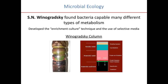Below the cyanobacteria, what develops is purple sulfur bacteria that, instead of splitting water, split hydrogen sulfide producing sulfur. The byproduct of that type of photosynthesis feeds sulfate-reducing bacteria that produce hydrogen sulfide and precipitate iron. At each level in the column, different organisms perform different metabolisms based on what's available, using the byproducts of other organisms' metabolism as electron sources and substrate for growth.